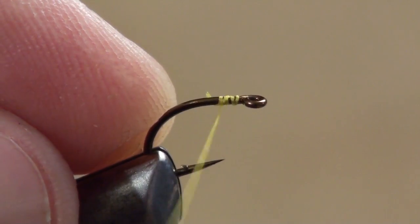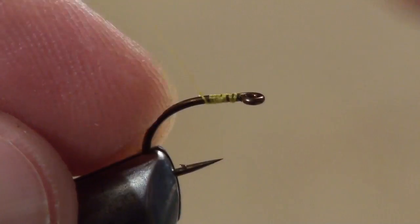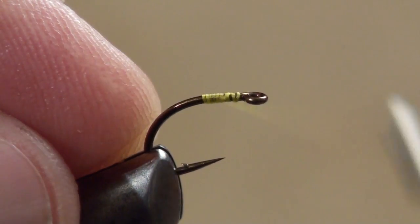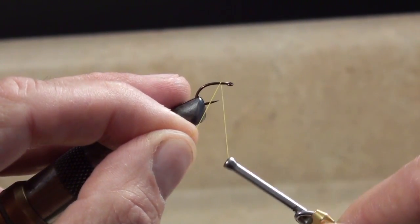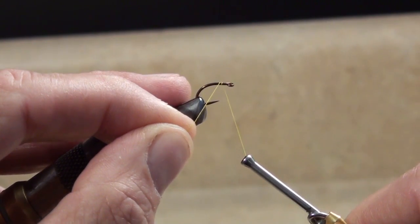The idea is to get the tag as short as possible without the wrap coming undone. This technique takes a bit of practice, but once you get it, it's very quick and effective.